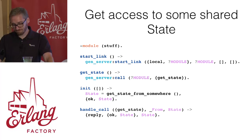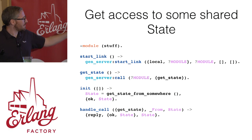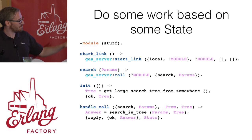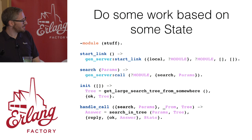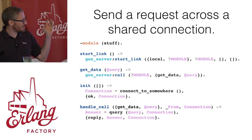I created some simple template gen servers. The first has a standard get_state call using gen_server:call, initializing state from somewhere and passing it back. The second example: a search gen server that builds a large search tree data structure at init and handles search calls by running the query against the tree. The third example is a database connection: connect at init, and for a get_data call you send the query across the connection and return the result.